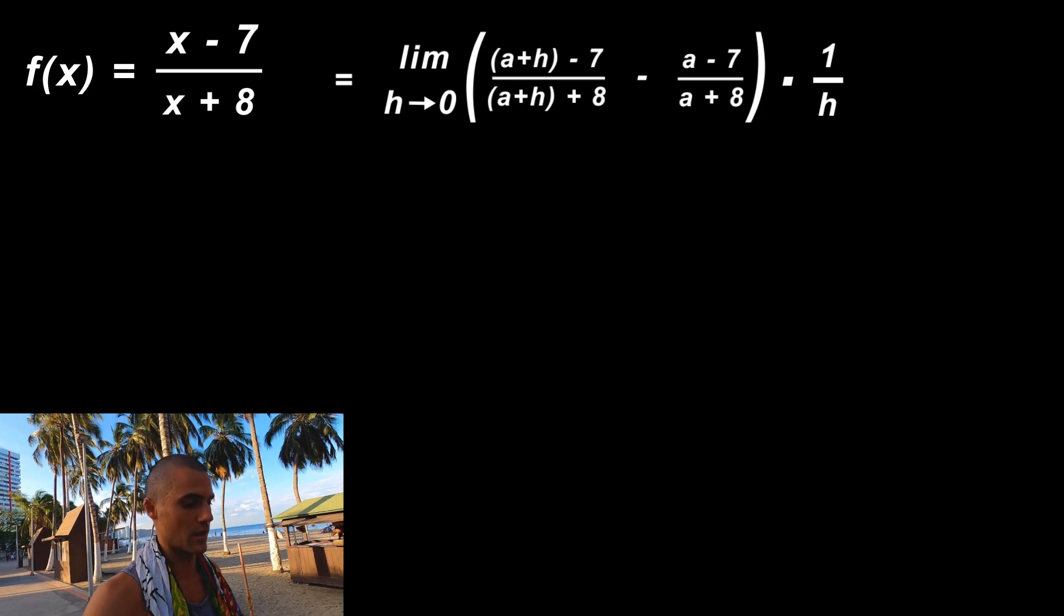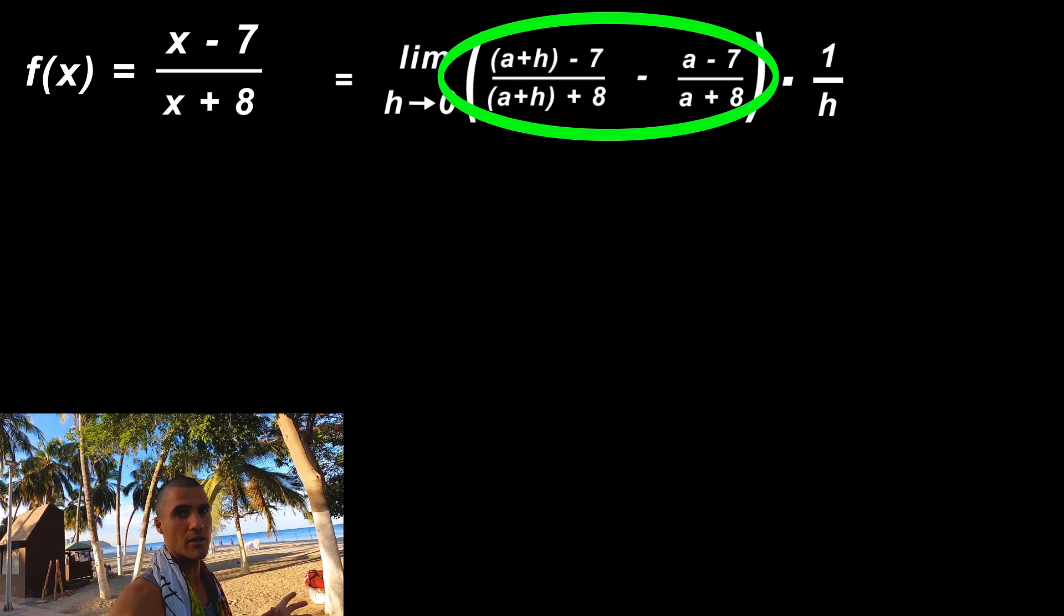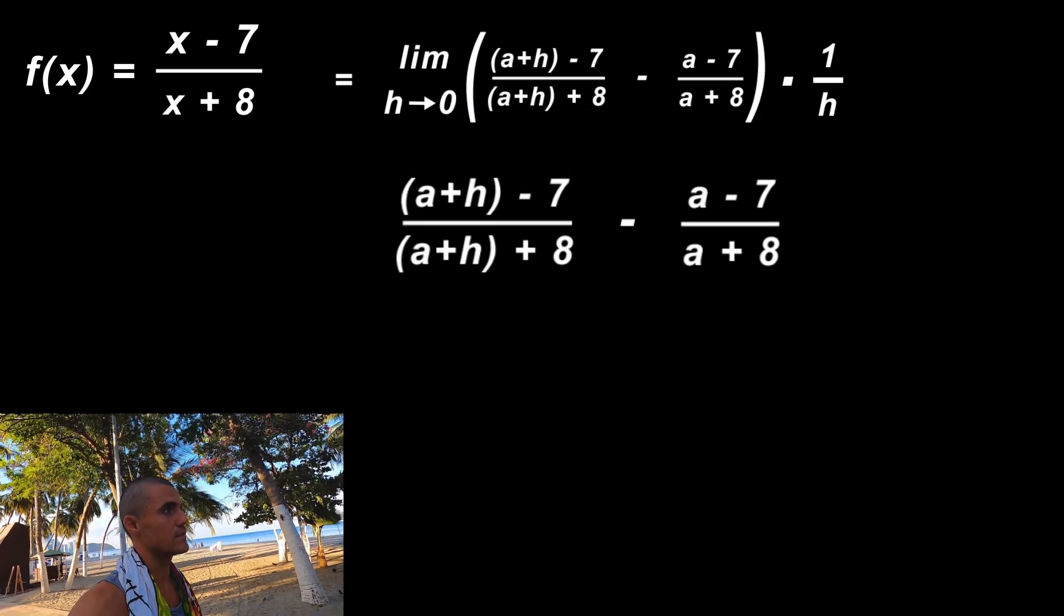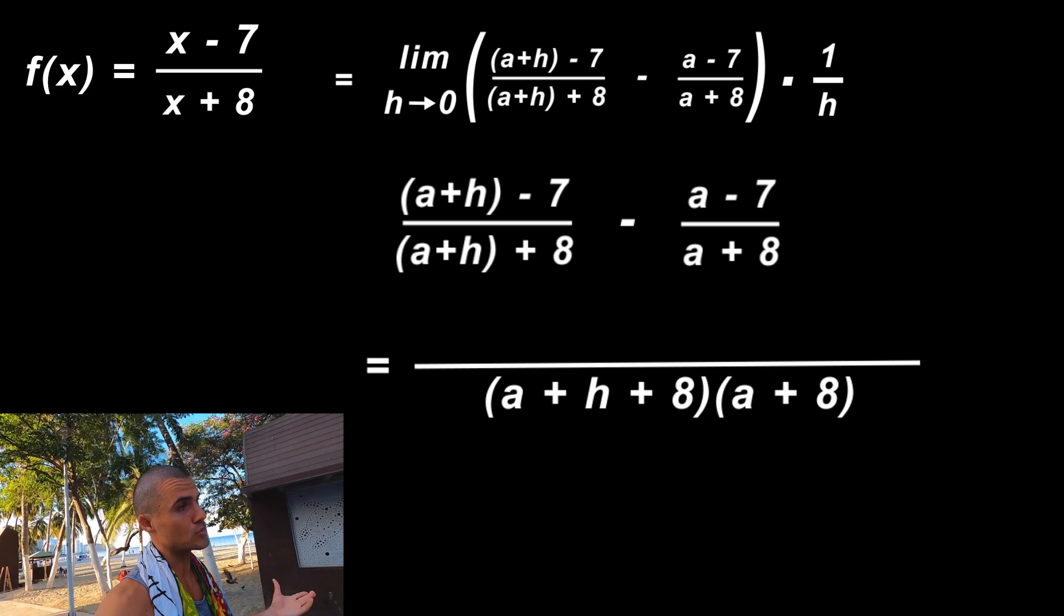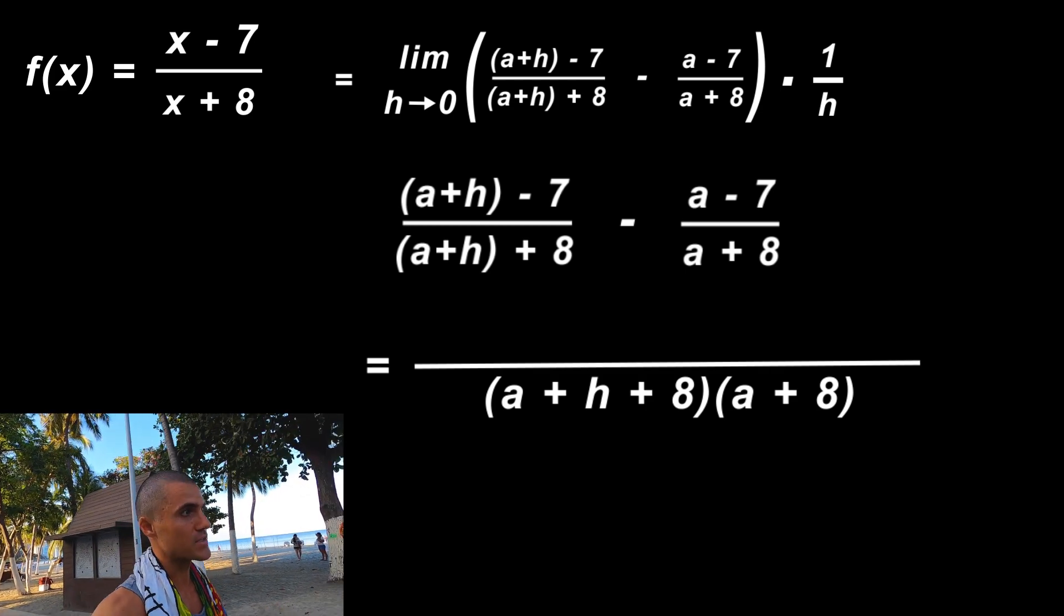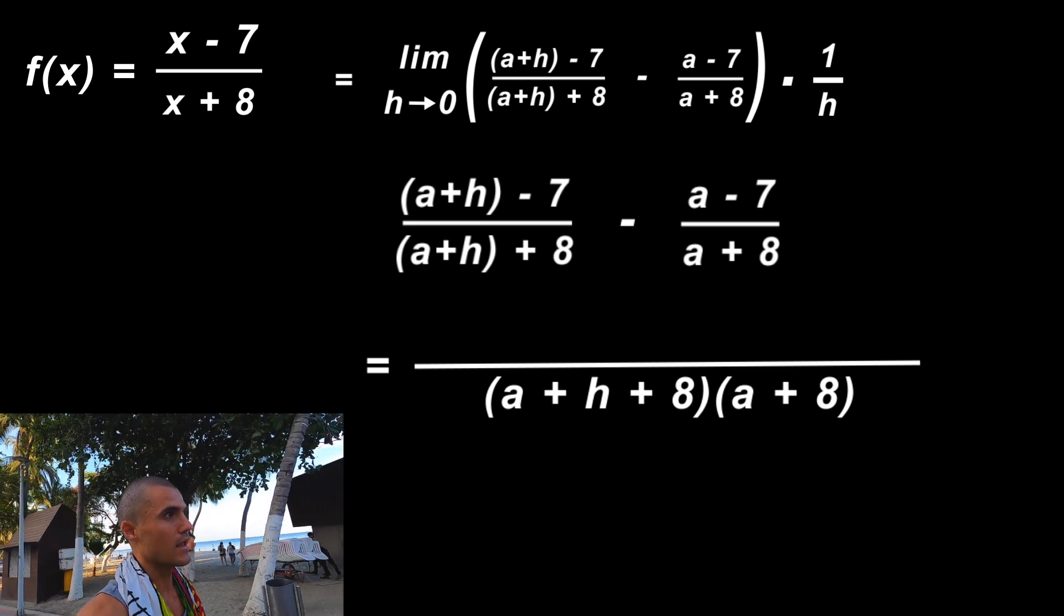Now at this point what we've got to do is take those two fractions and combine them into one. Notice that the common denominator, the lowest common denominator, is basically going to be those two denominators multiplied by each other: (a+h+8) times (a+8).